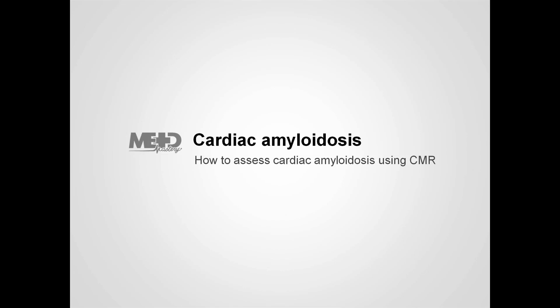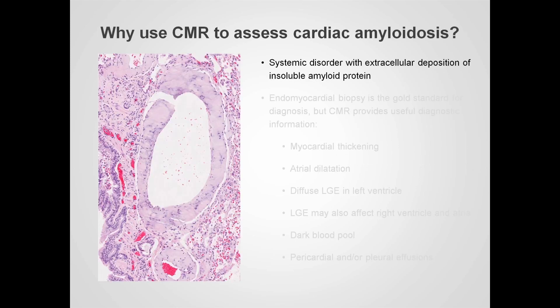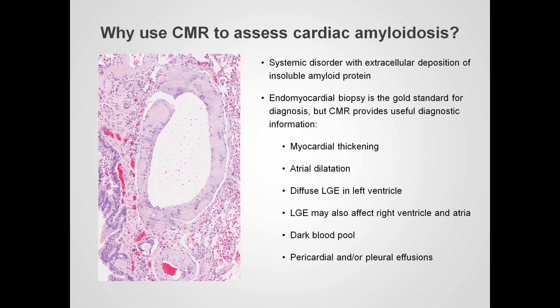In this lesson, we're going to see how we can assess cardiac amyloidosis using CMR. Cardiac amyloidosis is a systemic disorder with the extracellular deposition of insoluble amyloid protein. The gold standard for the diagnosis of cardiac amyloidosis is an endomyocardial biopsy, as shown in the image on the left, but CMR can provide very helpful diagnostic information.